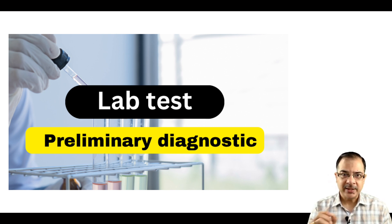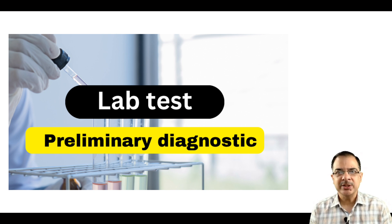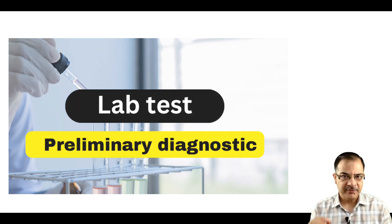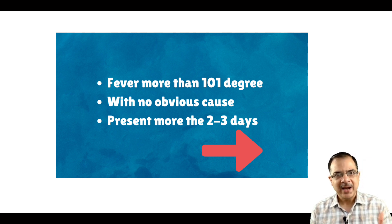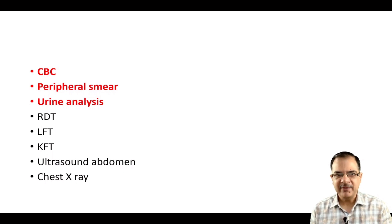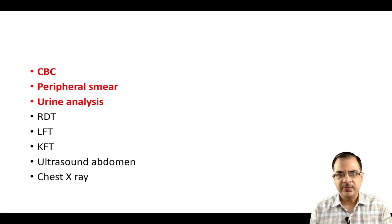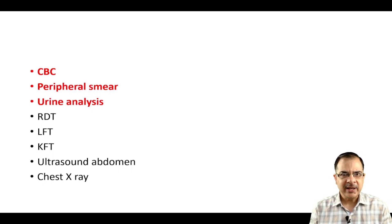We have seen that in OPD lots of investigations are recommended to the patient, but we should be precise in writing the investigations because all patients can't afford them. If a patient comes to my OPD with a fever of more than 101 degrees, no obvious cause, and fever present for more than two or three days, I will go for three basic tests: CBC, a peripheral smear, and urine analysis. Other tests like rapid diagnostic tests, liver function tests, kidney function tests, ultrasound, and X-ray have specific indications.